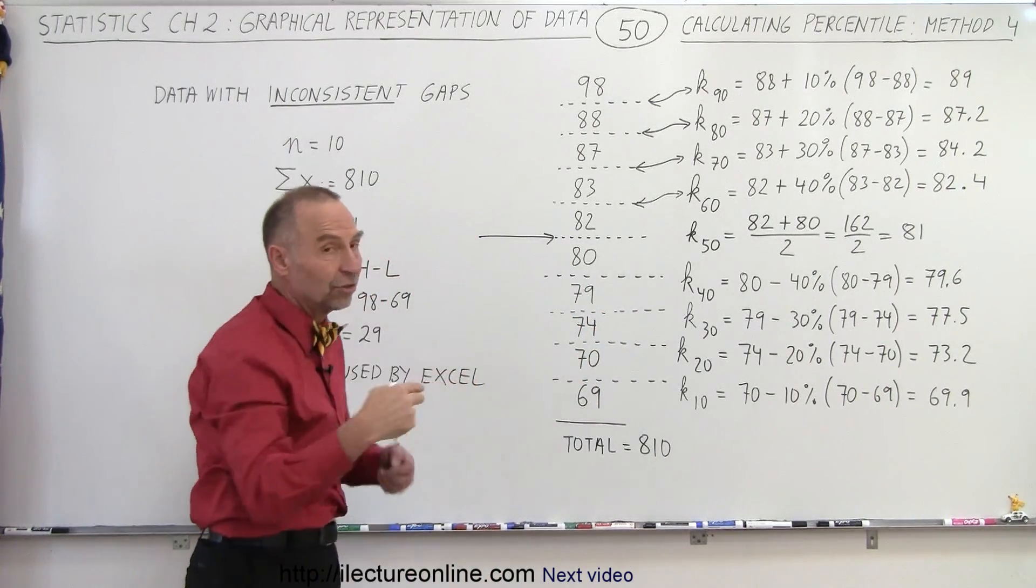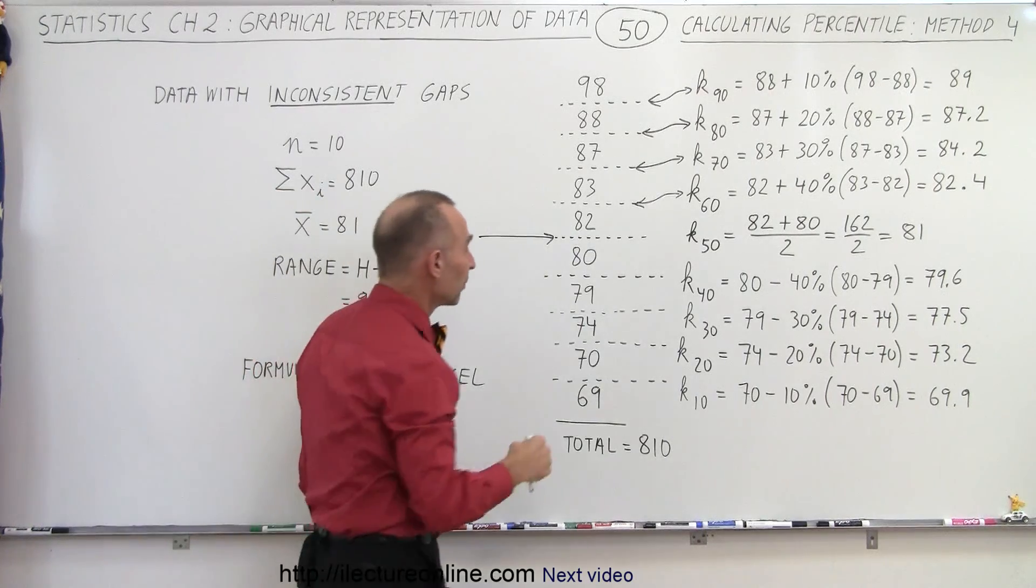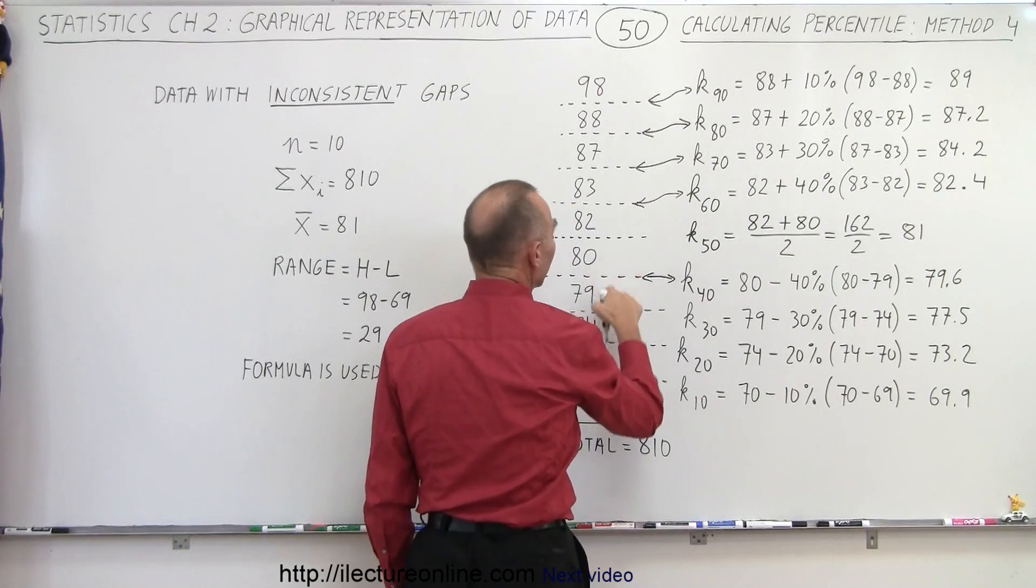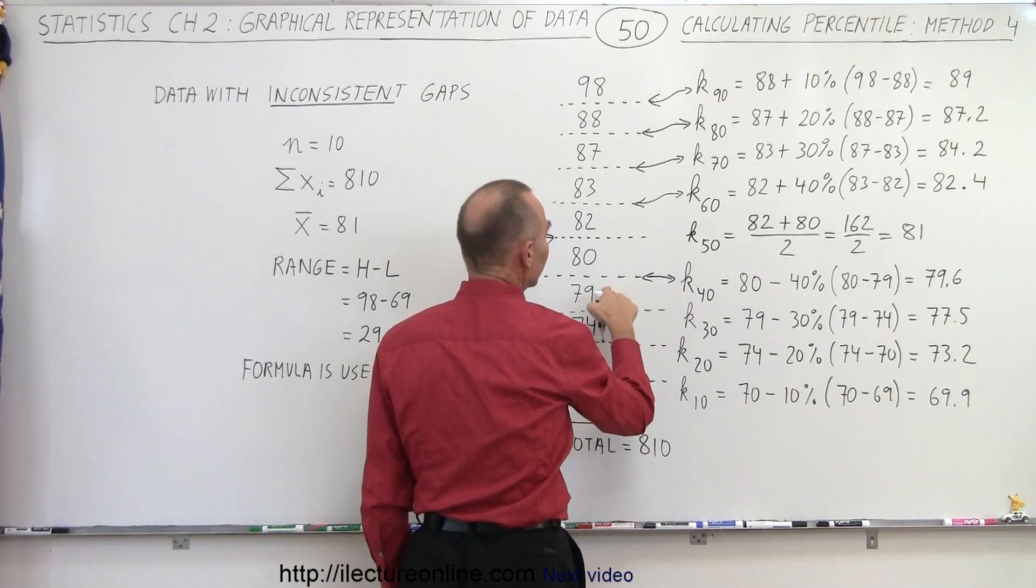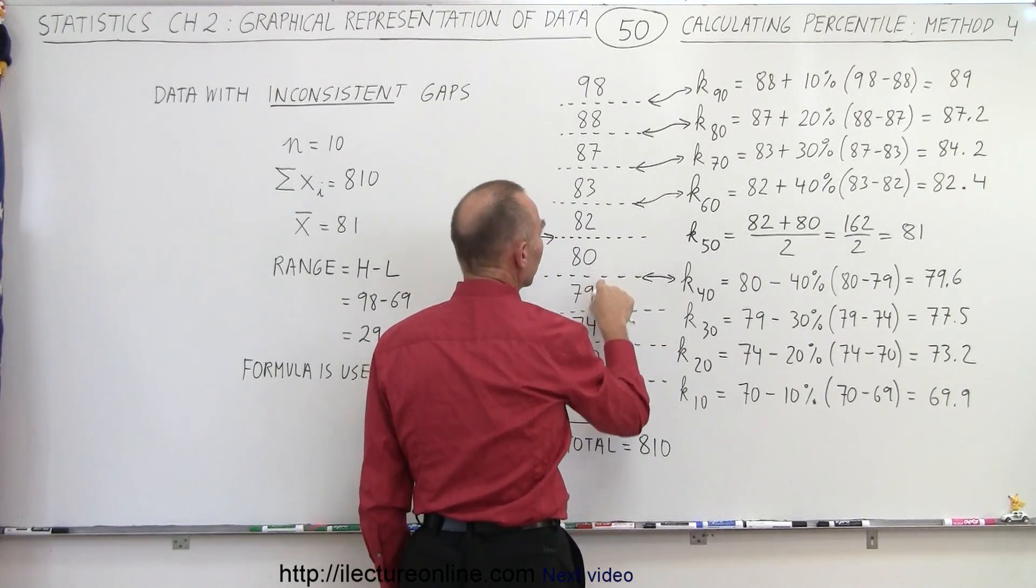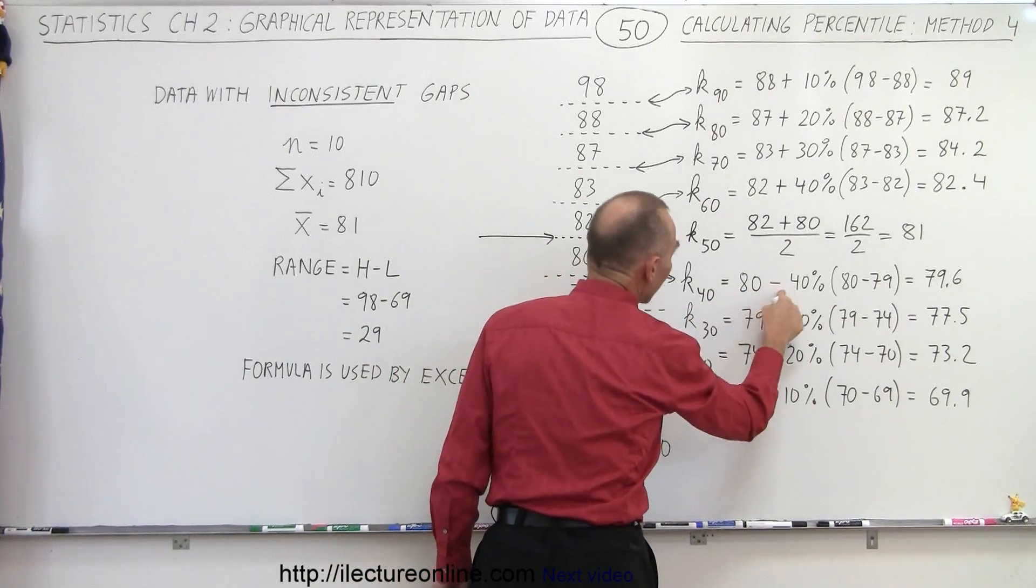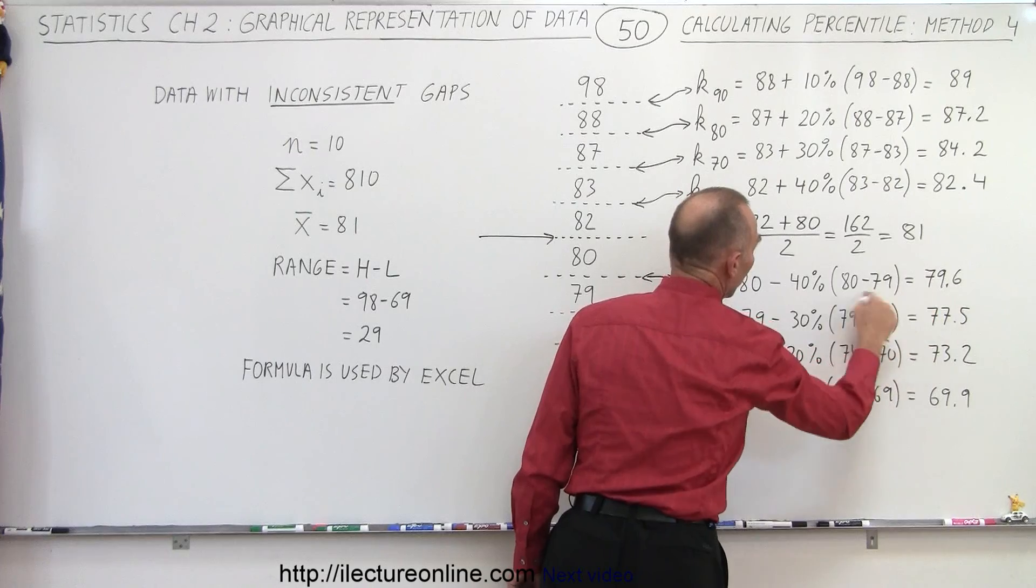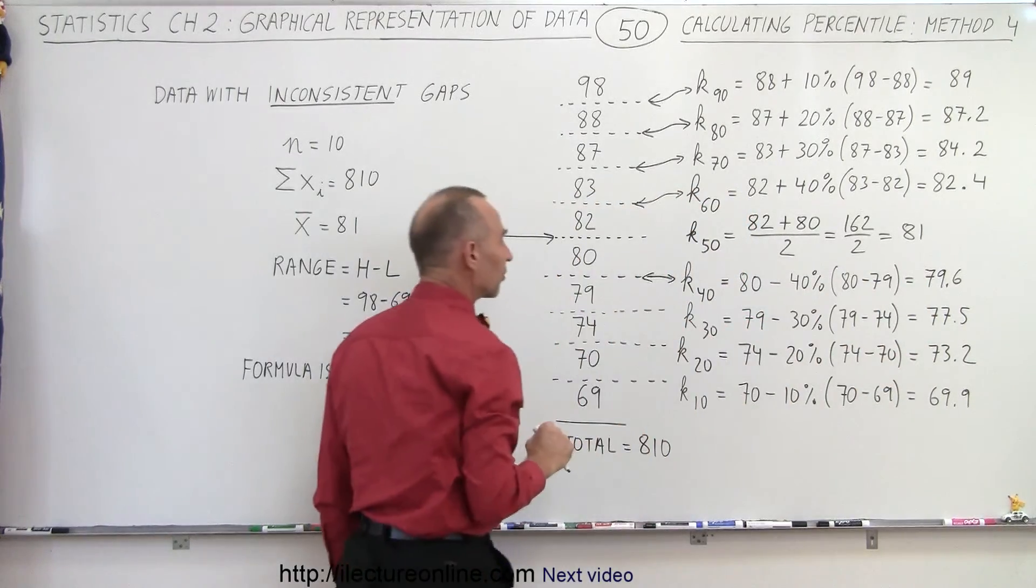Working our way downwards, it's kind of the same thing in reverse. So we find the boundary between the two values that represent the 40th percentile. We take the larger of the two values and subtract 40% of the difference. So in this case, 40% of 1 would be 0.4. Subtract it from 80, we get 79.6.